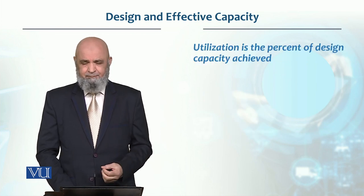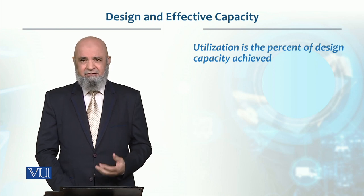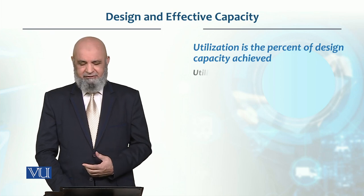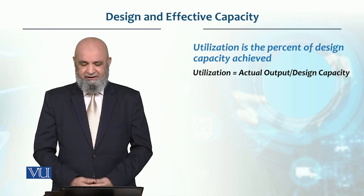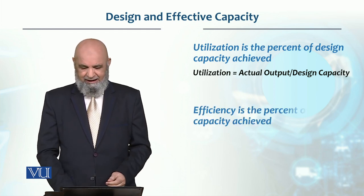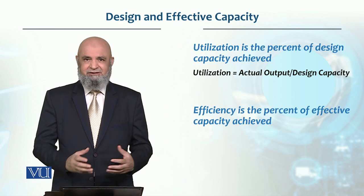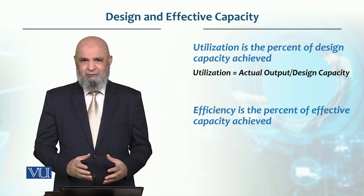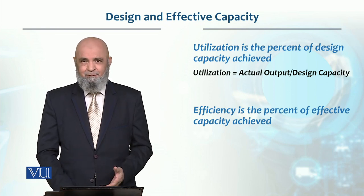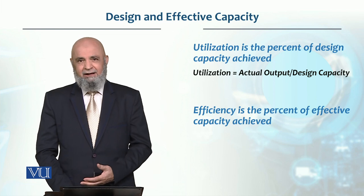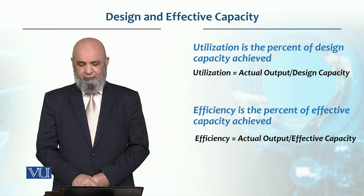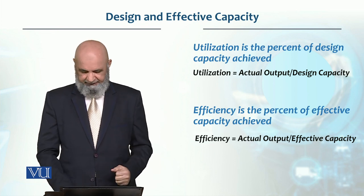Now if we look at utilization — utilization is the percent of design capacity achieved. That is, how much of the design capacity we have actually achieved. So utilization is actual output divided by design capacity. And efficiency is checked against effective capacity — that is, what we actually produced versus what we expected based on effective capacity. So efficiency is actual output divided by effective capacity.